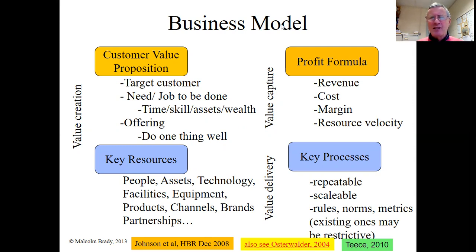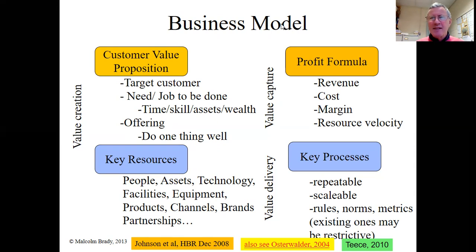Particularly when innovating your business model, the current rules, norms, and metrics may be restricting your ability to create a good offering — examining and altering them may allow you to create a new innovation. The final element is the profit formula. One of the values of the business model is it puts stress on the profit formula. There's no point having a great offering and identifying your target market if you can't make a profit — a firm that doesn't make a profit can't exist for very long. You need to look at your revenues: where exactly are you getting them from? What are customers paying for? This isn't always clear — with eBay or Uber, for example, it's not always obvious where revenues come from or who's actually paying.